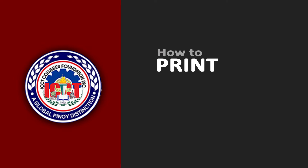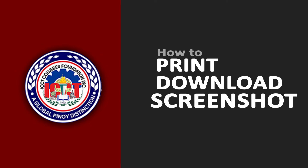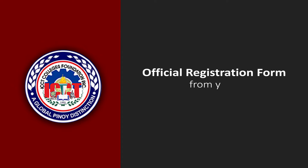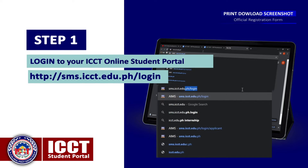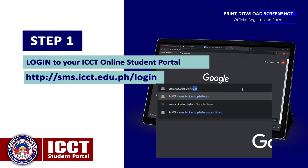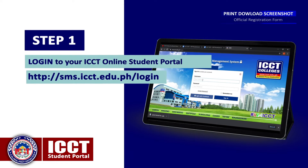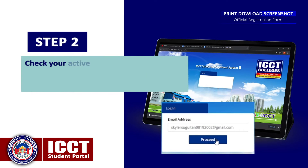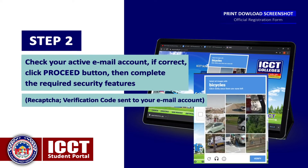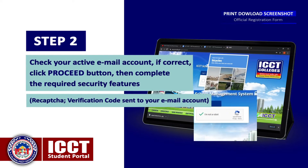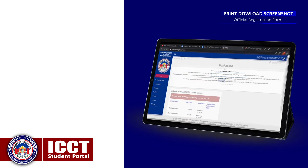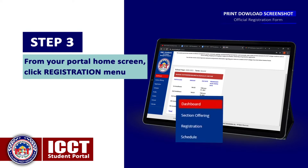How to print, download, or screenshot your official registration form from your ICCT online student portal. Step 1: Login to your ICCT online student portal at sms.icct.edu.ph/login. Step 2: Check your active email account; if correct, click the Proceed button, then complete the required security features — reCAPTCHA verification and the code sent to your email account.